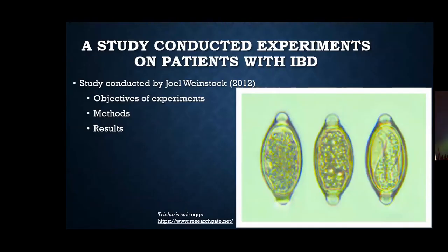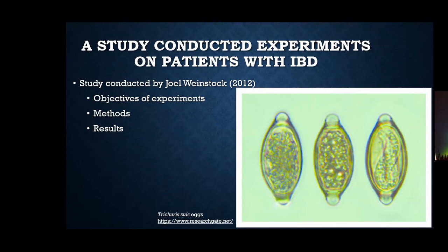Helminths have been used to help treat patients with IBD. In a study conducted by Joel Weinstock, he wanted to answer how parasitic infections could improve health. He infected pigs with helminths — specifically Trichuris suis — let the eggs mature, cultured the worms, and allowed adult worms to reproduce eggs that were then used in humans. In the first trial, one patient with Crohn's disease was given 2,500 eggs, with no adverse effects and improvement in symptoms. In the second trial, 29 patients with Crohn's disease were given live eggs every two weeks for 24 weeks, and nearly 80% had decreased symptoms while 72% went into remission.